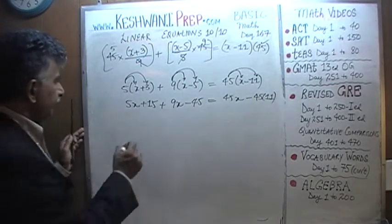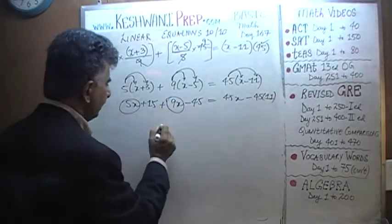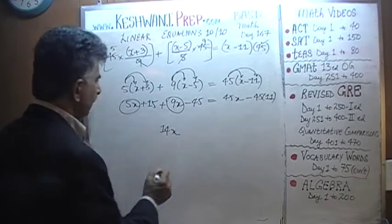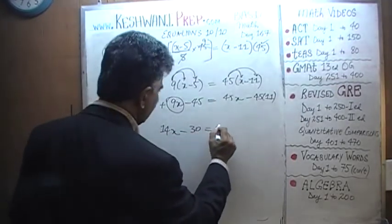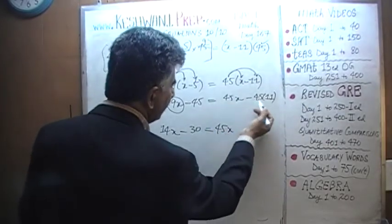Plus 9 times x is going to be 9x and 9 times negative 5 is going to be negative 45. Let's combine the like terms. Here we have 5x, here we have 9x, that's 14x. Here we have positive 15 and negative 45, that's going to give us negative 30 and that has to equal 45x minus, it looks like we have no choice but to figure that out.